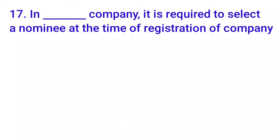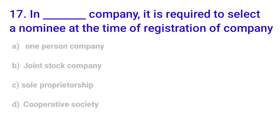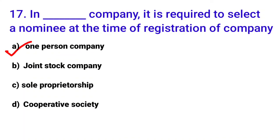Seventeenth MCQ: 'In dash company, it is required to select a nominee at the time of registration' — options: one person company, joint stock company, sole proprietorship, cooperative society. In a one person company, since there is only one owner, you must select a nominee to maintain perpetual succession. The answer is option A: one person company.